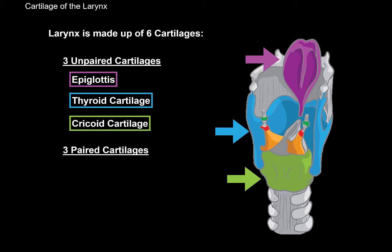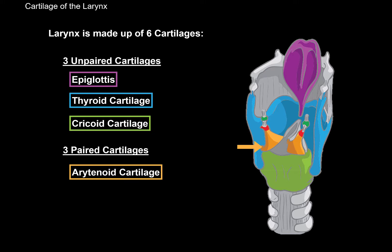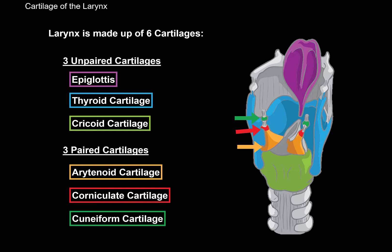The paired cartilages are the ones you have two of, so two of each. These include the arytenoid cartilage, here in yellow; the corniculate cartilage, in red; and the cuneiform cartilage, here in green. So these are the cartilages that make up the larynx.